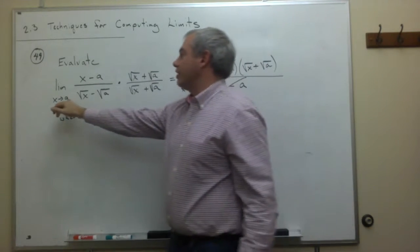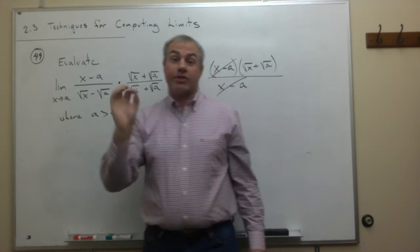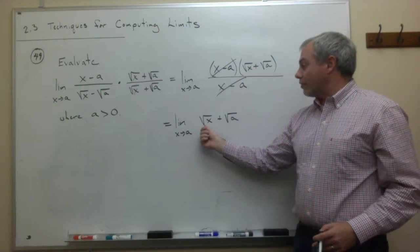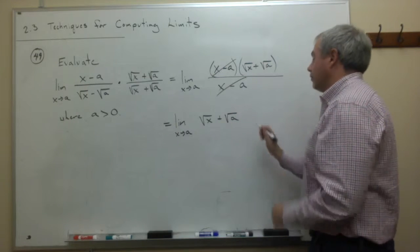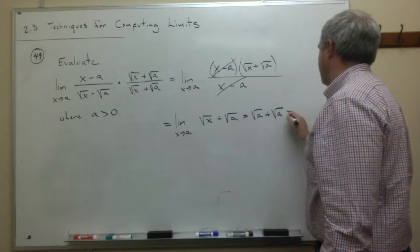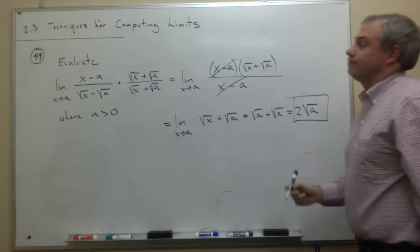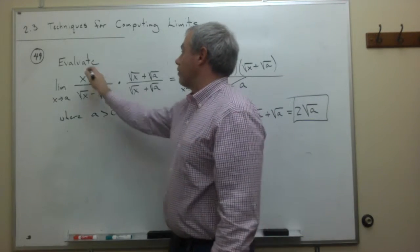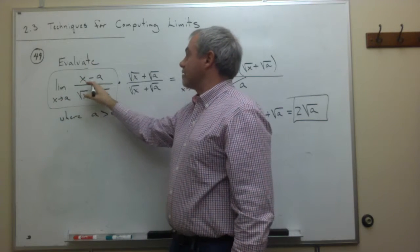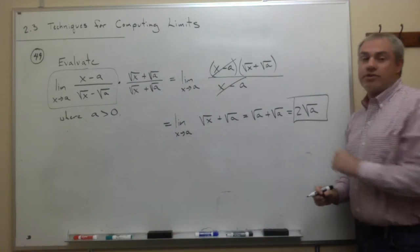At the beginning here, if I would have plugged in a for x, I get square root a minus square root a, which is zero, which we know is terrible. But here I get, if I plug in a square root a plus square root of a, which is just fine, no division by zero, so I get square root a plus square root a, which is two square roots of a. So the limit that I started with, which I'll box in right here, the limit as x goes to a of x minus a over square root of x minus square root of a is just two square roots of a.